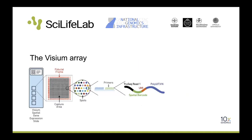Looking at the array in more detail, each spot has a specific spatial barcode representing X and Y coordinates that allow mapping back to where the transcript derived during data analysis. The probe also has a unique molecular identifier (UMI) enabling removal of PCR-induced duplicates, a poly-T stretch, and a short anchor stretch that binds into the gene.